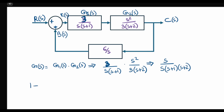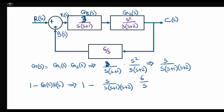The denominator comes out as 1 minus G(s)·H(s). Substituting G(s) = s / [s(s+1)(s+2)] and H(s) = 6/s, the s in H(s) cancels with the s in the numerator. We get 1 minus 6 / [s(s+1)(s+2)]. Now we have G(s) and 1 minus G(s)·H(s), so we can find the closed loop transfer function.